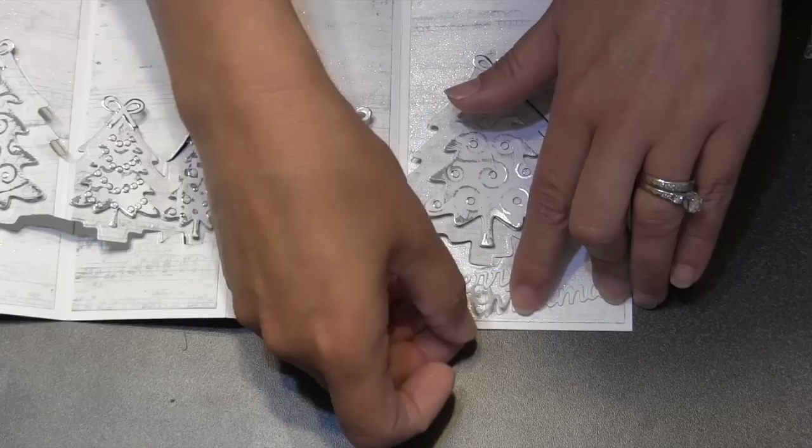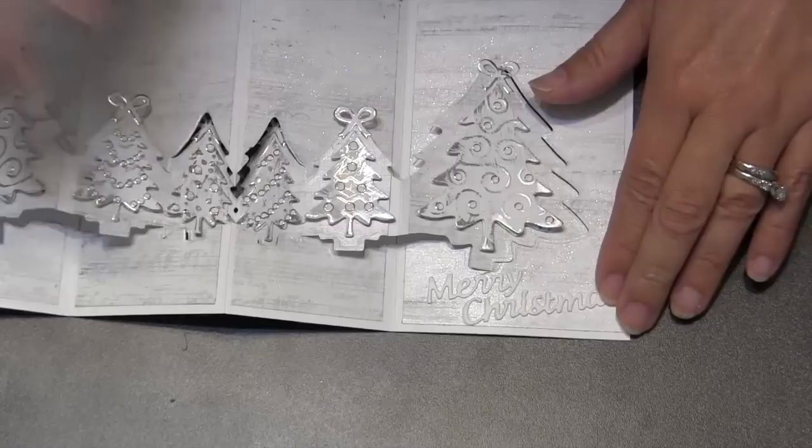So once again, I just ran back through and die cut a second set with that cardstock that had the double-sided adhesive on it. That makes it a sticker. Then I can just stack them right up on top of each other and get a little bit of dimension to my title.